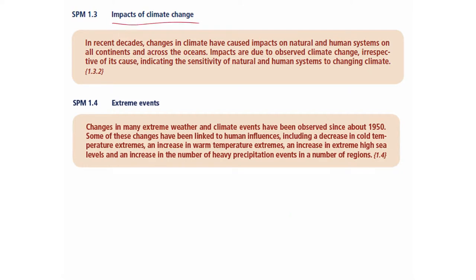Impacts of climate change: in recent decades, changes in climate have caused impacts on natural and human systems on all continents and across all oceans. Impacts are due to observed climate change irrespective of its cause, indicating the sensitivity of natural and human systems to changing climate. We have to say 'irrespective of cause' because even if we do not agree on what caused the change, the sensitivity of the system is very high and we might face irreparable damage in any case.